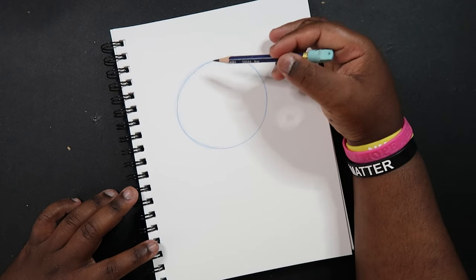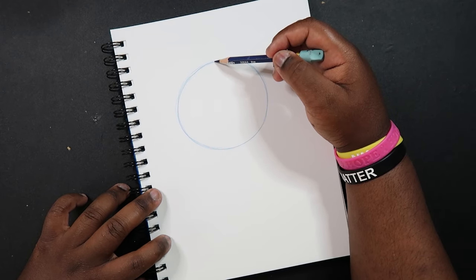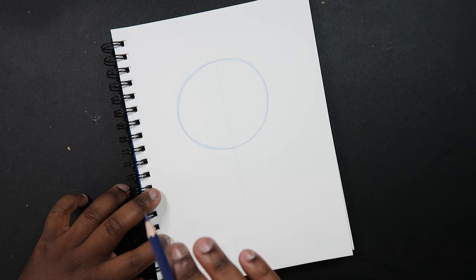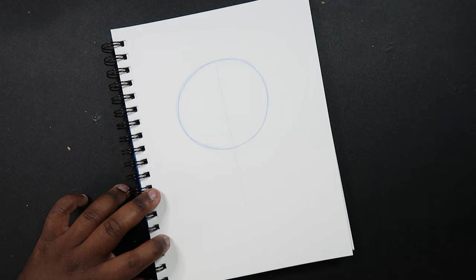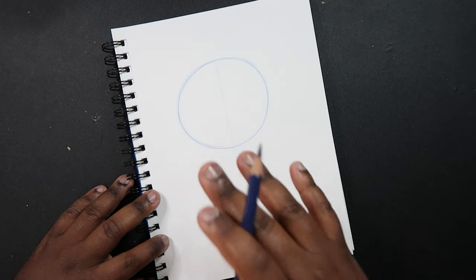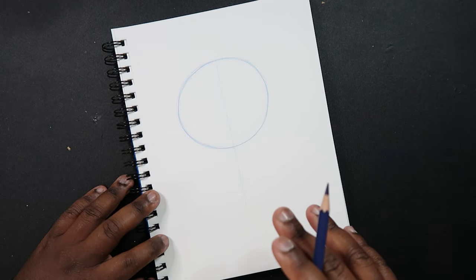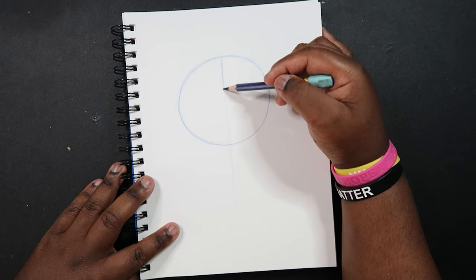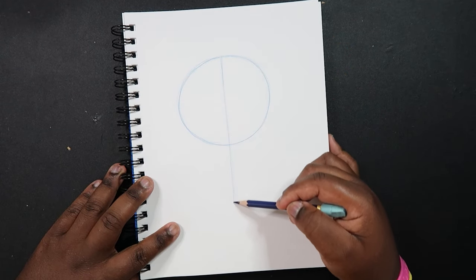And then I'm just going to make a line that goes straight down the circle. This is going to be my line of symmetry, so everything on both sides of this line will be the same. The circle, the face shape, and all other facial features will be the same on both sides of this line. So I'm going to darken this line of symmetry so you guys can see it better.